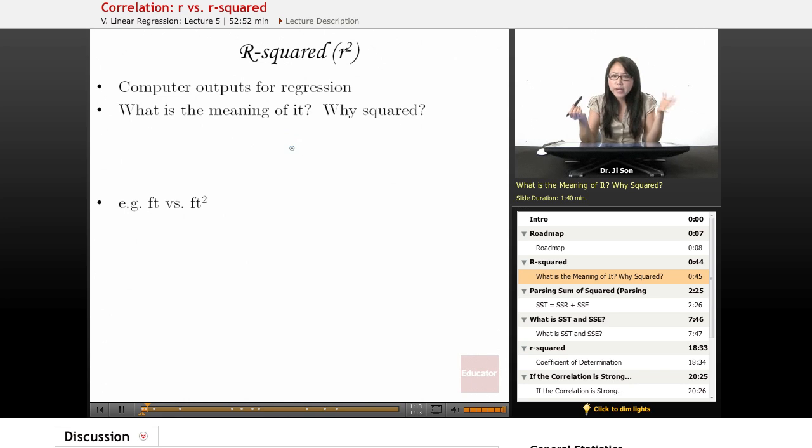Why is r squared? Why not just have r? Often, if you just find the correlation, you'll just get r. But if you find the regression, you'll get r squared. So it's like, what's the deal?